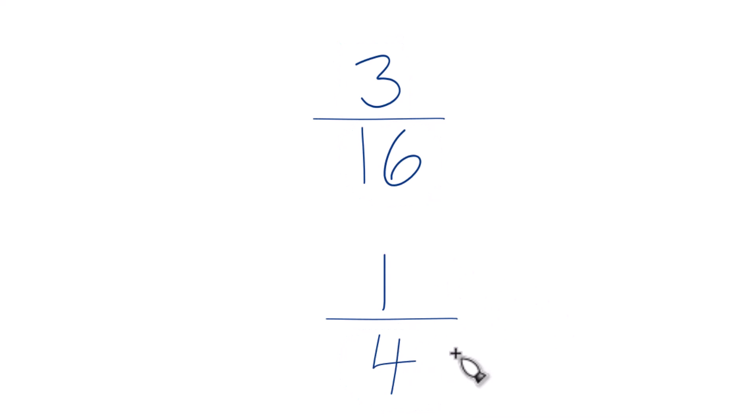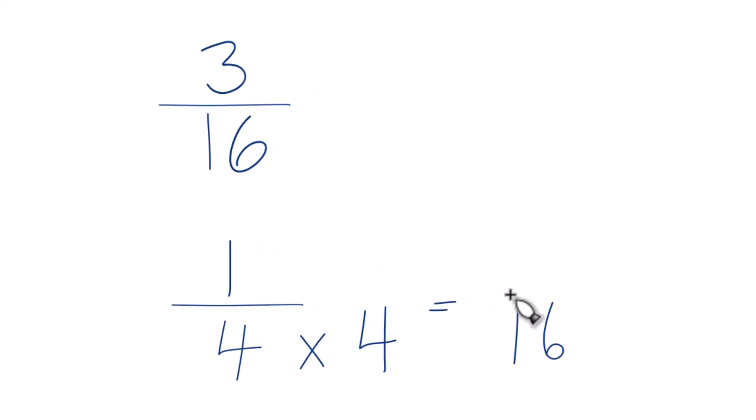Why don't we take 4 and multiply 4 times 4? Because 4 times 4, that gives us 16. And up here we already have 16, so we'll keep this as 3 sixteenths.